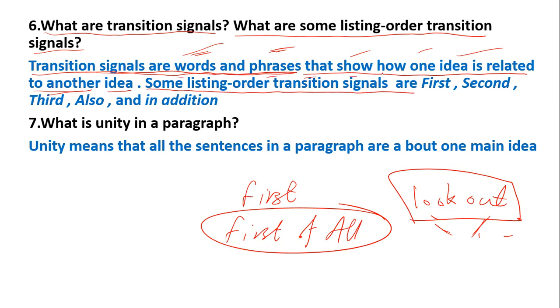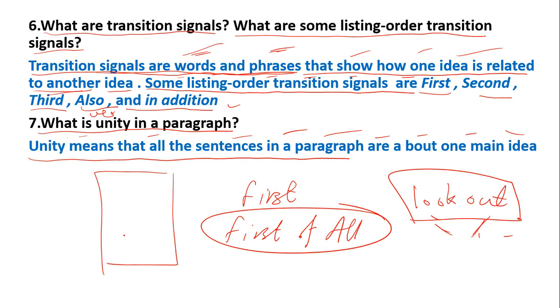What is unity in a paragraph? Unity means that all sentences in a paragraph are about one main idea. For example, sports is good for health for five reasons. The first reason, the second reason.